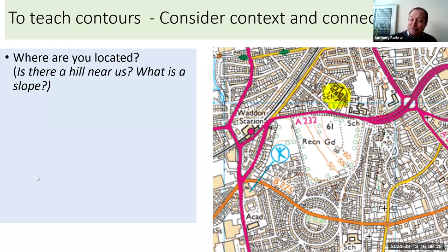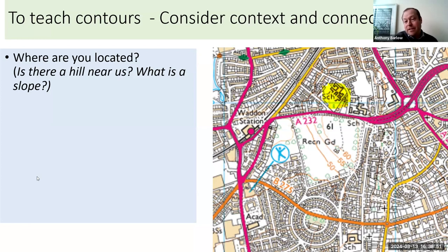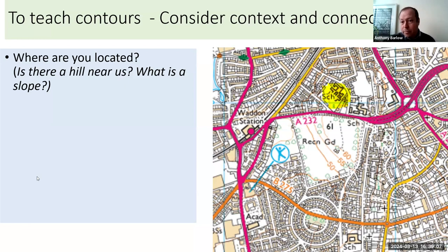Everybody was aware of that slope — they hauled themselves up and down it from time to time — but it really wasn't a key part of their teaching. The fact that there's a valley there, the Wandle Valley, going all the way through various boroughs of London into the Thames, that this is part of the catchment area of a river feeding the Thames — that hadn't really come across to them when thinking about where they are in the world.